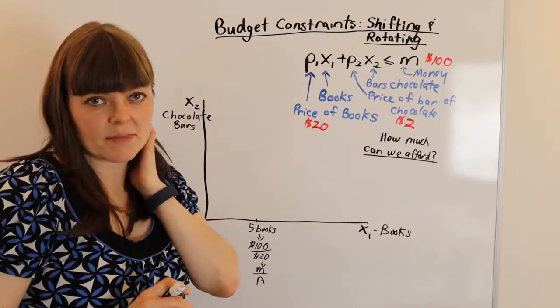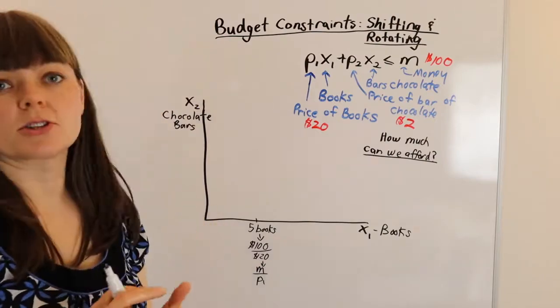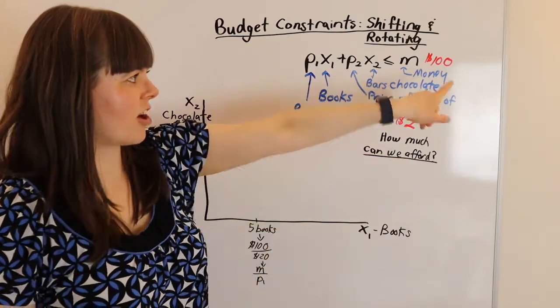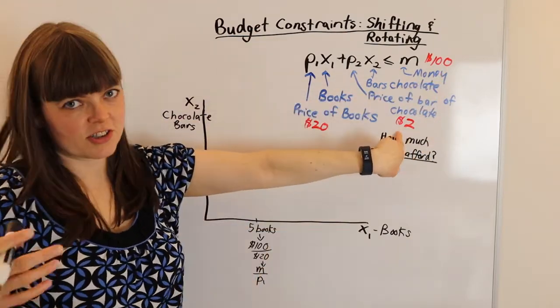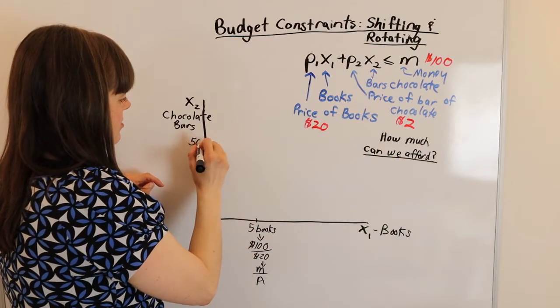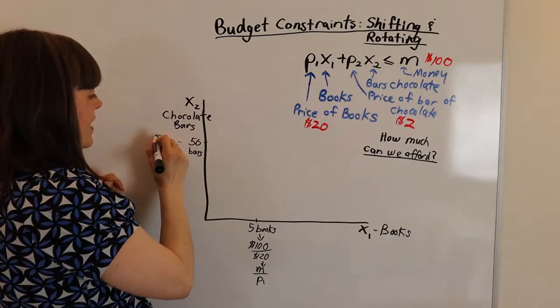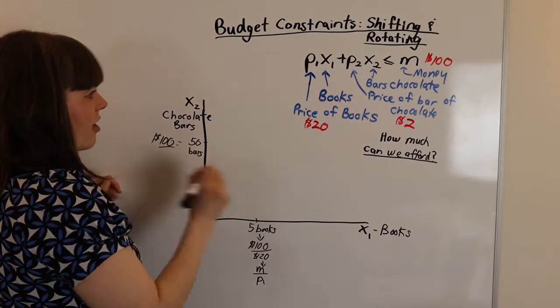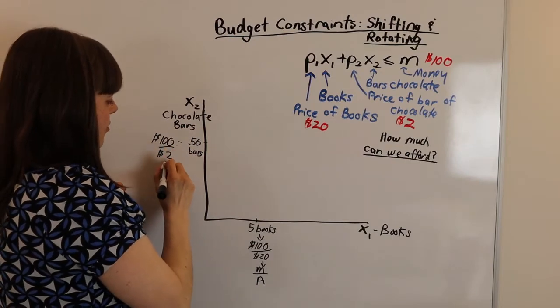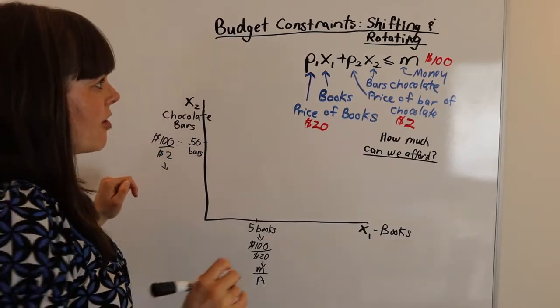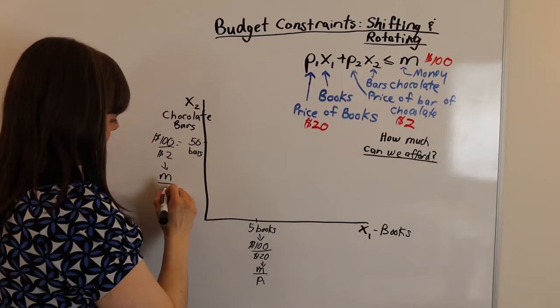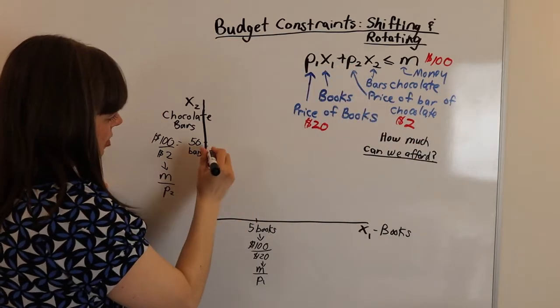And we're going to do the same thing with bars of chocolate. So how many bars of chocolate can we buy? If we spend all of our money on chocolate, we have $100. Chocolate bars cost $2. So we're going to be able to buy 50 bars of chocolate. And we got that by dividing the amount of money we have, $100, by the price of chocolate, which is $2. And if we want to translate that into variables, that's going to be M divided by P2.